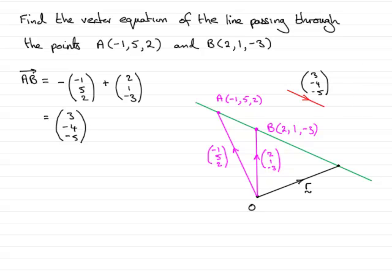So, if I wanted then, as I say, to get from A to any point on this line, what I've got to do is go from O to A and then travel any amount of the vector 3, minus 4, minus 5, either in this direction or in the other direction, it will be negative values.